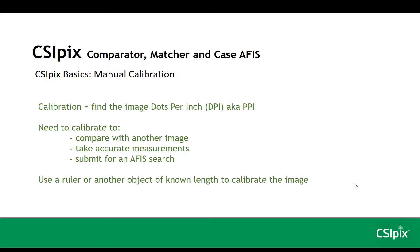You need to calibrate to be able to compare with another image, to take accurate measurements, or if it's a fingerprint image, to submit it for an APHIS search. This function needs a ruler or another object of known length to be able to calibrate the image.